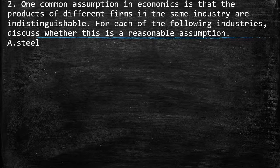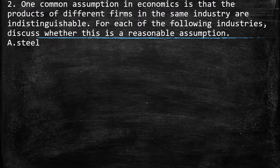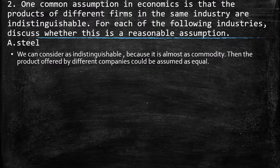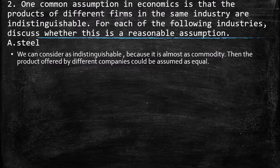One common assumption in economics is that the products of different firms in the same industry are indistinguishable. For each of the following industries, discuss whether this is a reasonable assumption. The first one is steel. We can consider it as indistinguishable because it's almost a commodity — something that is a raw material without too many processes inside it. So the product offered by different companies can be assumed as equal. Even though there are different ways, pure steel can be considered indistinguishable.